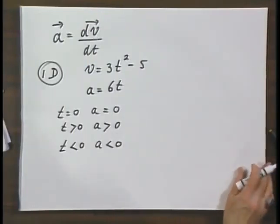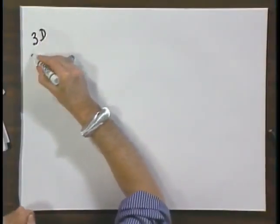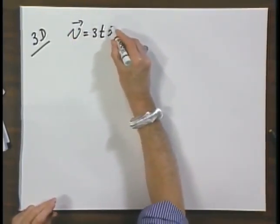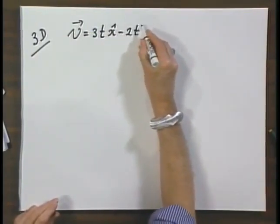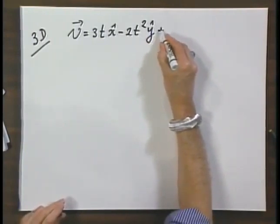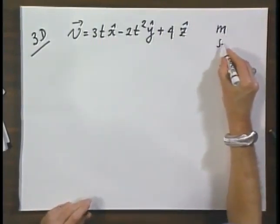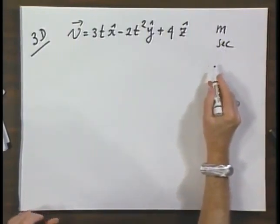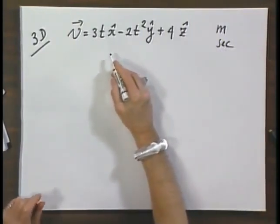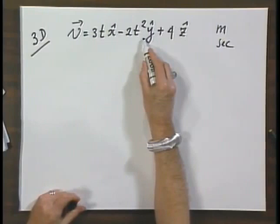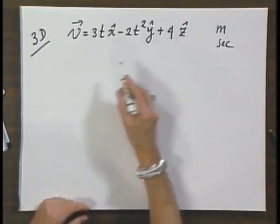Wonderful advantage of one-dimensional situations. Now let's turn to a more complicated situation, the three-dimensional situation, 3D. Let the velocity vector be 3t x hat minus 2t squared y hat plus 4z hat. And distances are always in meters and times always in seconds. The components of the velocity in the x direction and in the y direction are time dependent. But this component in the z direction is not time dependent.